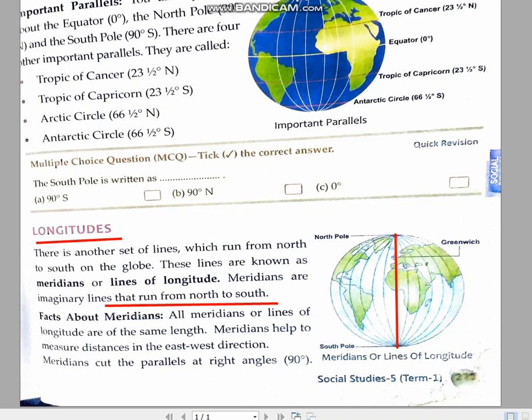They run from the north to south and all the meridians are of same length. If we discussed about parallels, equator is the longest parallel, and as we move in the northern hemisphere or southern hemisphere, because the earth is spherical in shape, the length of the parallels goes on decreasing.